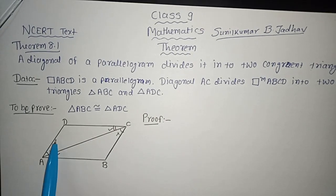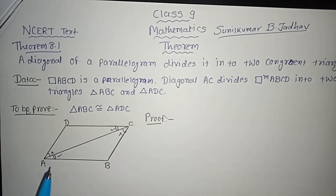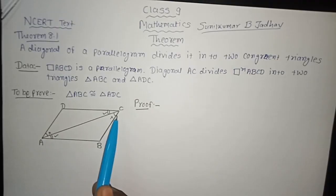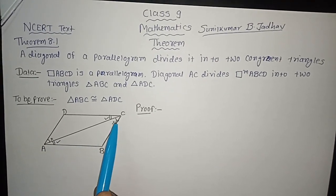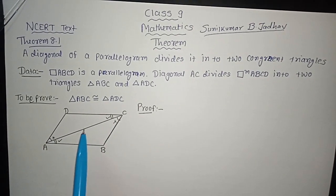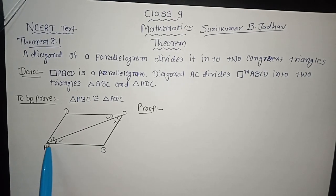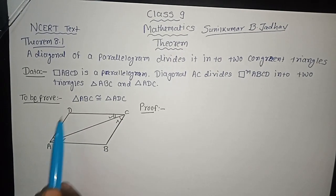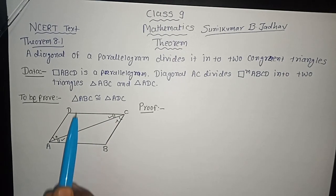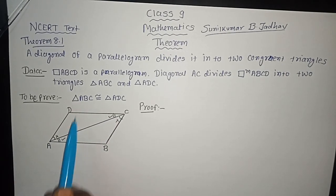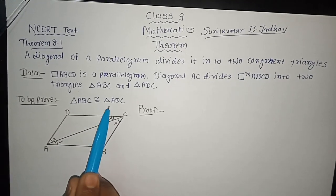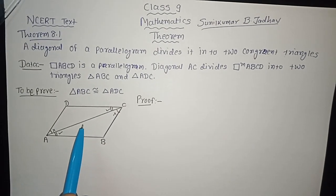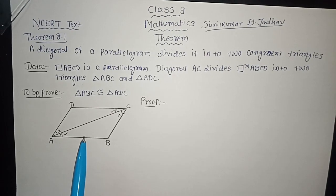As we draw the diagonal AC of the parallelogram, it divides it into two triangles — triangle ABC and triangle ADC. What we have to prove is that both these triangles are congruent, that is triangle ABC is congruent to triangle ADC. Let us start with the proof.